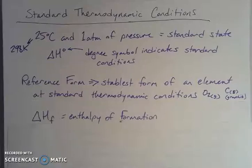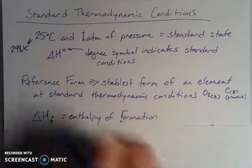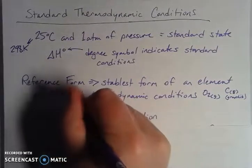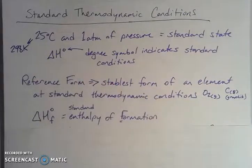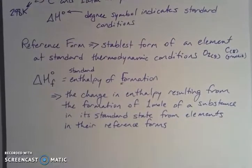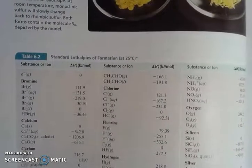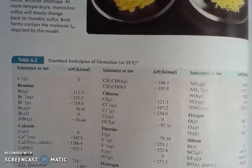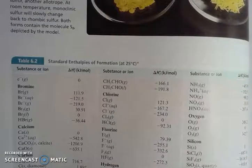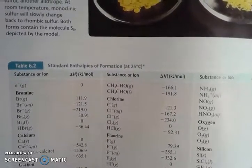Those reference forms can be used to calculate what is called the enthalpy of formation — delta H with a subscript F for formation. With the degree symbol, that indicates the standard enthalpy of formation: how much energy it takes to form one mole of a substance in its standard state from its elements in their reference forms. We find these values in standard thermodynamic tables, available in textbooks, with values in kilojoules per mole for different compounds, ions, and forms.